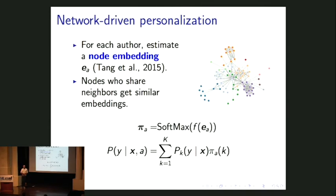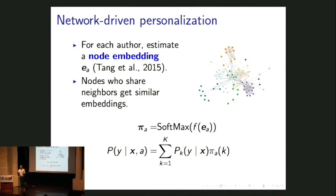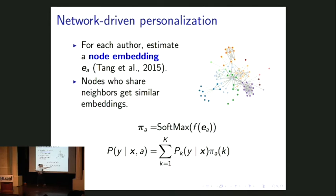We use node embeddings to operationalize the social network structure. Social networks are complex relational objects; node embeddings compress them into vector representations for each individual — and the key thing is I don't need labeled data for that representation, just knowing who you follow or retweet. From that vector representation E_A, I pass it through a feedforward neural network, and the output is a softmax layer giving my distribution over the ensemble of basis models. For each author, I get a weighting on different basis models — I'm learning K different classifiers, one for each of K different linguistic styles, and I guess what style you'll use based on where you are in the network.